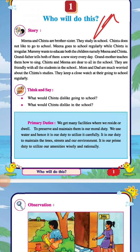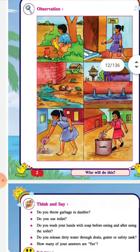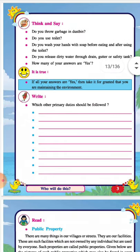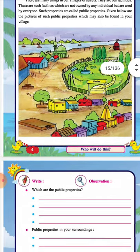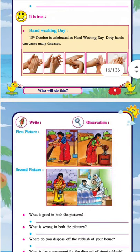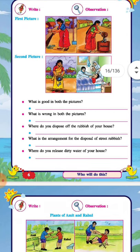Students, let's continue our video chapter one, which we will do from class with EBS. Yesterday we did primary duties and public property, okay, hand washing day. Now today we'll start from here.